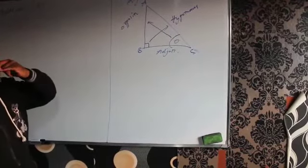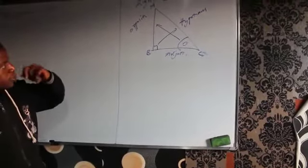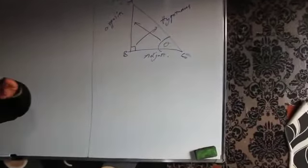So these are the parts that you are supposed to know on the right angled triangle.